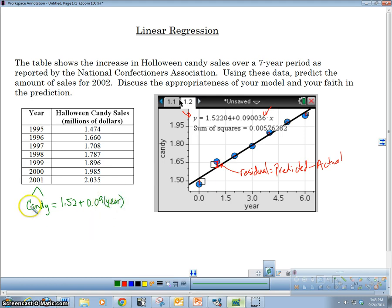Candy hat is equal to 1.52 plus 0.09 year. Okay. So this is our equation of our line. This is our model. All right. So use your model. What's my model? No, it's not Heidi Klum. It's candy hat.